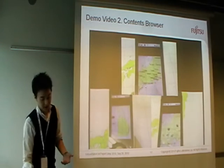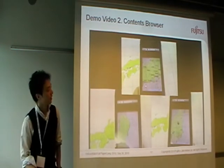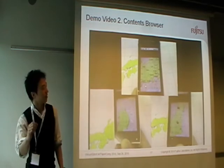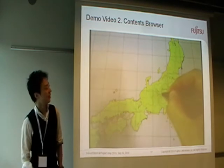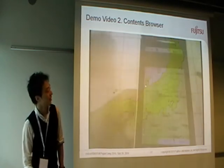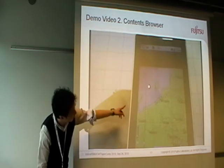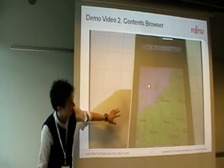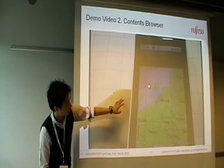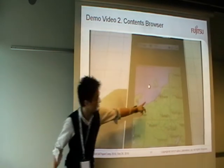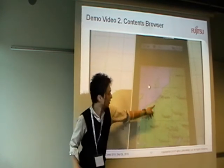When using maps for learning geography, children can write the name of a city directly on the map. Our technology can still recognize the map even when it is overlaid with handwriting like this.